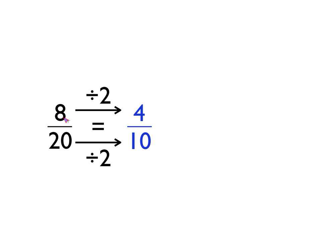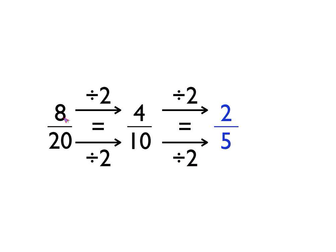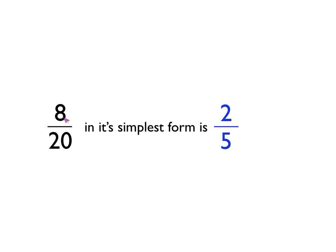Then you ask yourself: can I now think of a number which divides into four and divides into ten a whole number of times? Two goes in again — four divided by two is two, and ten divided by two is five. So we divide numerator and denominator by two again to get two fifths. Then repeat the process: can I think of a number which divides into two and divides into five? No, I can't. So two fifths is the simplest form of eight twentieths.